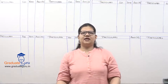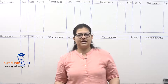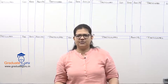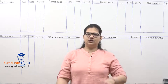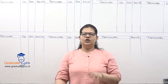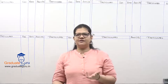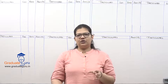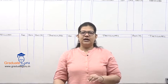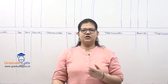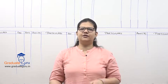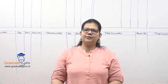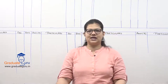Hello students, we are back again with a new session of process costing. In the previous session, we learned a new type of sum where output from a particular process was split — part transferred to the next process, and part sold immediately in the market. We showed entries for sales and whether we had a profit or a loss. I will do a similar type of sum today.